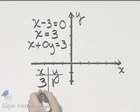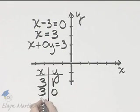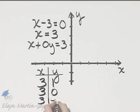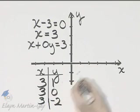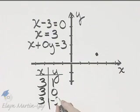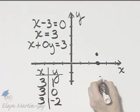As long as the X value is 3, you have an ordered pair solution. Let's plot these ordered pair solutions. 3 to the right, 1 up. 3 to the right, 0 up or down. And 3 to the right, 2 down.